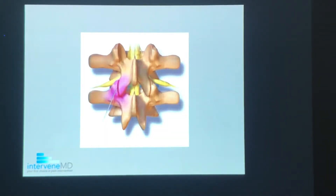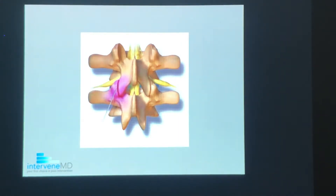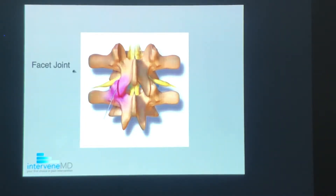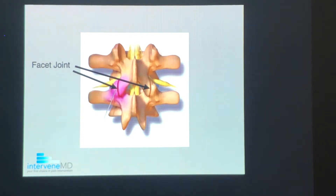Today let's look at the facet joint injection. This is a view of the back of your spine. The center of your spine — the bumps you feel when you run your hand down the center of your spine — is here. The facet joints are here. They are paired on either side of the middle of your spine from your head all the way to the bottom of your spine.